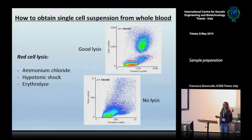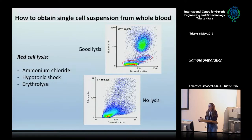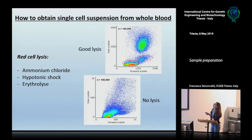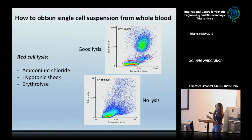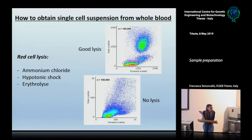The common detergents that induce the lysis of red cells are ammonium chloride — this is less used than erythrolyse — or you can induce the lysis of red cells by a hypotonic shock. As you can see here in this plot, after the lysis of red cells, you can identify the other populations thanks to physical parameters: side scatter and forward scatter. The smaller ones are lymphocytes, a little bit bigger are the monocytes, and the more complex cells are granulocytes. Of course, if you cannot perform the lysis of red cells, you are not able to distinguish the other populations, but you can use an antibody against CD45 in order to exclude them.